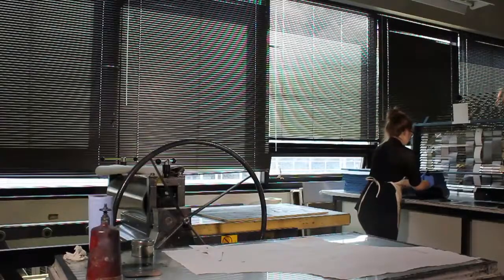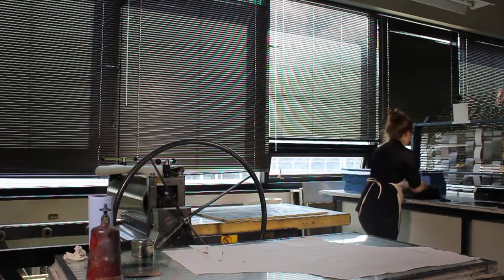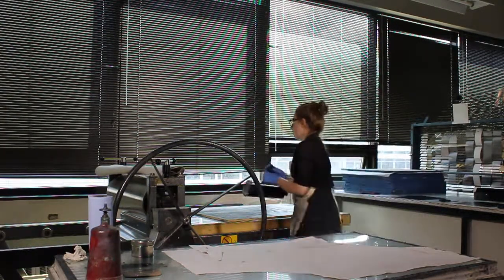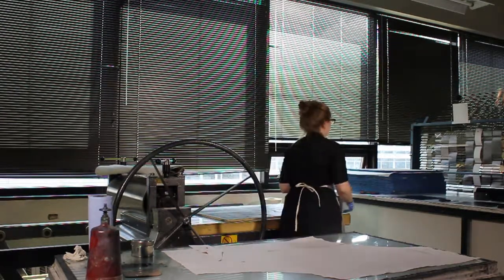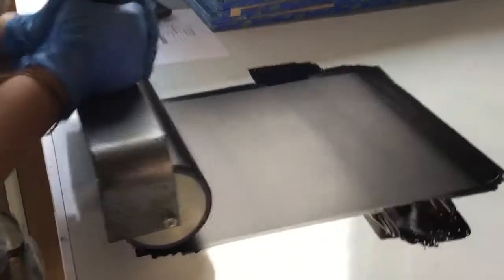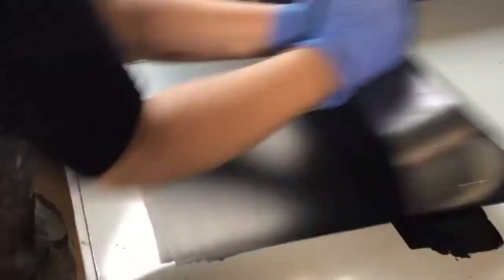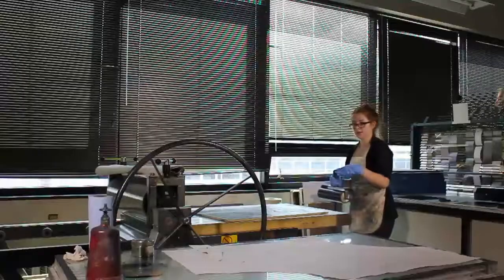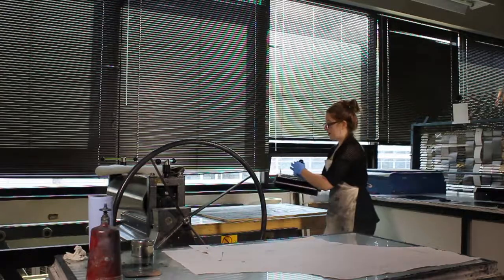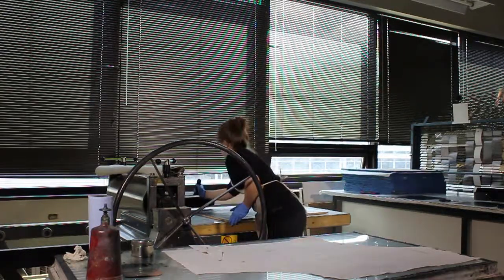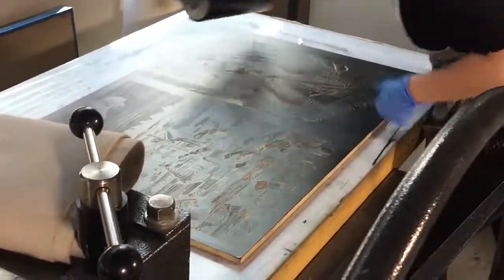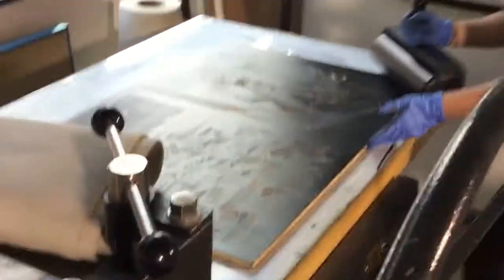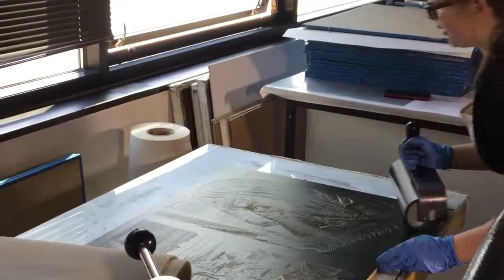So the ink is sitting right on top of everything. What happens with relief is you carve away areas that you want to be white, and everything that's sitting flat on top gets rolled up with ink and that's what you see on the paper. So it's kind of a negative process. You have to think the opposite of how you would doing like drawing or something, where every line you make is black, or I guess every line you make is white.